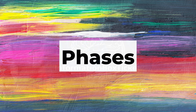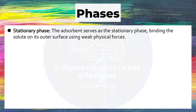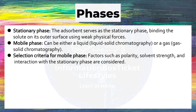Phases of Adsorption Chromatography: The stationary phase is the adsorbent, which binds the solute on its outer surface using weak physical forces. The mobile phase can be either a liquid, as in liquid-solid chromatography, or a gas, as in gas-solid chromatography. Selection criteria for the mobile phase include factors such as polarity, solvent strength, and interaction with the stationary phase.